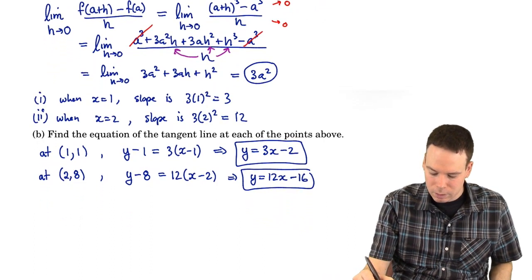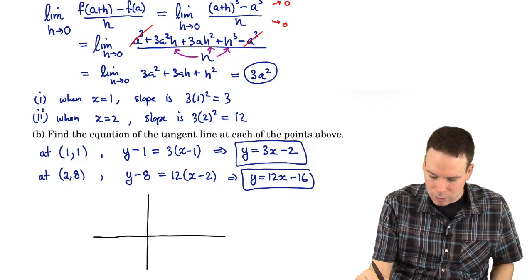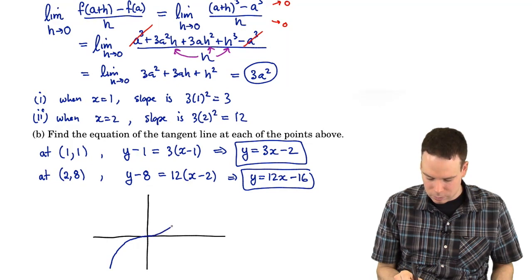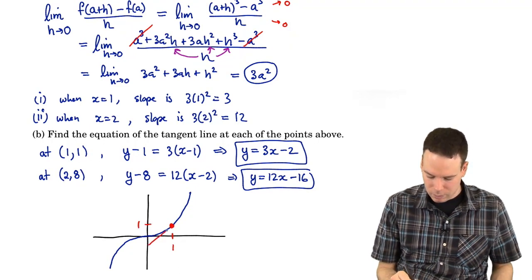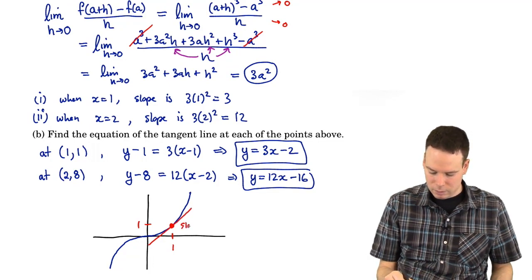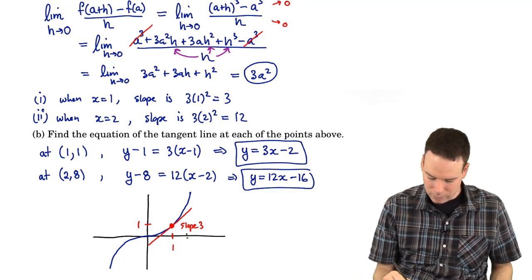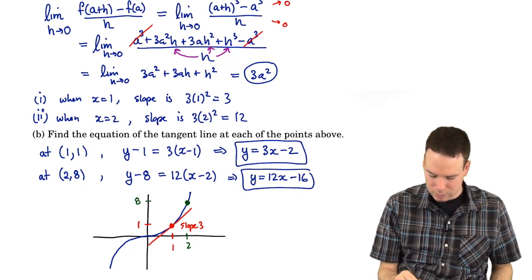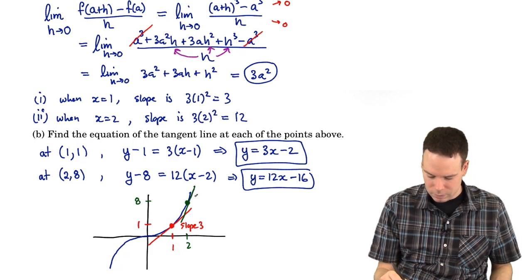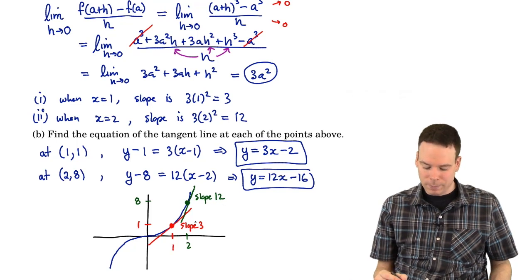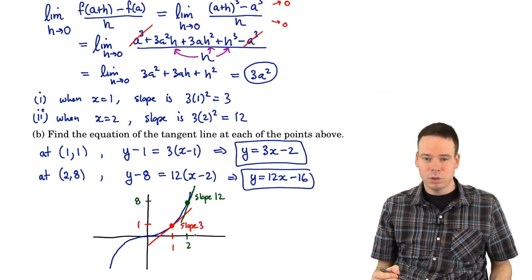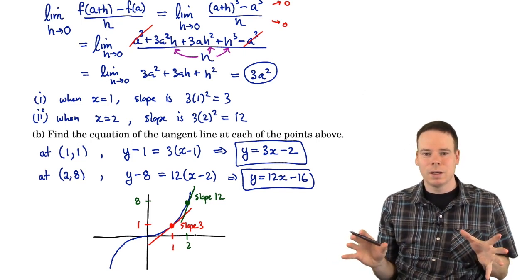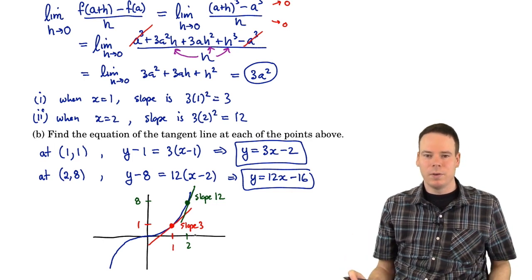Looking at the graph of the cubic function, we found the tangent line at the point (1,1), which had a slope of 3, and also at the point (2,8), which had a slope of 12. We should do a quick reality check: I do expect the slope at (2,8) to be steeper than the slope of the tangent line at (1,1). And it is — the slope was 12 at (2,8) and only 3 at (1,1). Doing these quick reality checks are essential to give you confidence that you didn't make any errors.